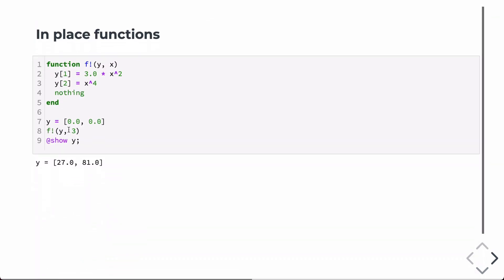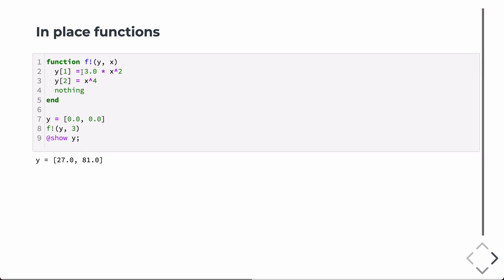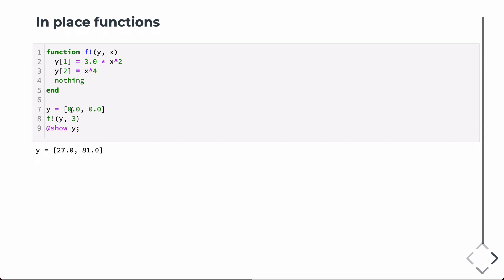We can also do this for in-place functions. So, for example, in this case, we're going to have a function. In Julia, the idiomatic way to have in-place functions is to write an exclamation point. So in this case, we're going to pass in a vector y, and then we're going to store two function evaluations of x. So 3 times x squared is the same as the one before. And also in the second component of y, we're going to store x to the fourth. So we can actually compute the derivative of this. Again, basically, it'll compute the derivative of each of these functions.